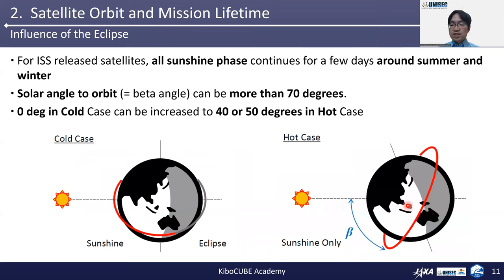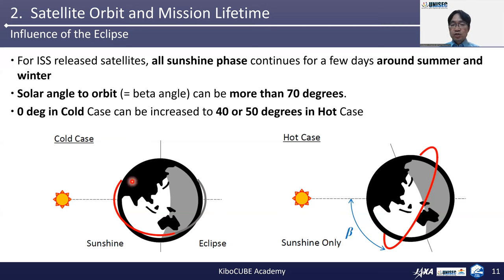For ISS-released satellites, we need to consider a special heat environment. All-sunshine phase continues for a few days around summer and winter. The solar angle to the orbital plane is defined by symbol beta. This beta is constant in sun-synchronous orbit (SSO), but for ISS satellites it is not SSO. It is changing from zero to more than 70 degrees.